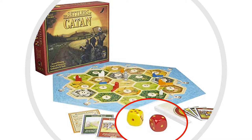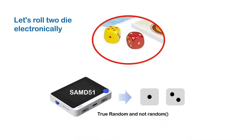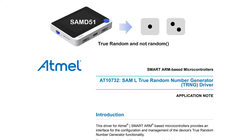I wanted to make something fun out of this, so I approached the problem using electronics — let's roll two dice electronically. I would use microcontrollers, the SAMD51, and use true random numbers, just like the roll of a die is actually random. We don't use a standard random function; it needs some kind of physical attribute that defines randomness. That rolls two different dice and displays it on the screen — that's the whole premise behind today's video.